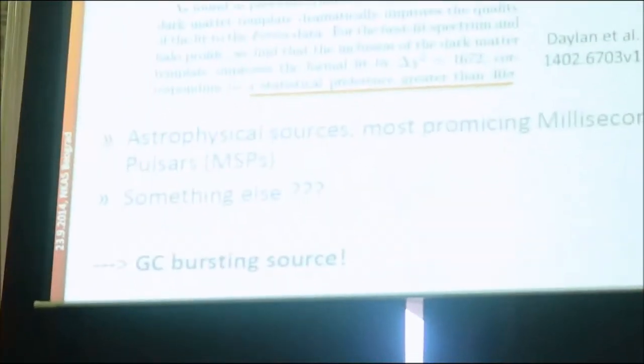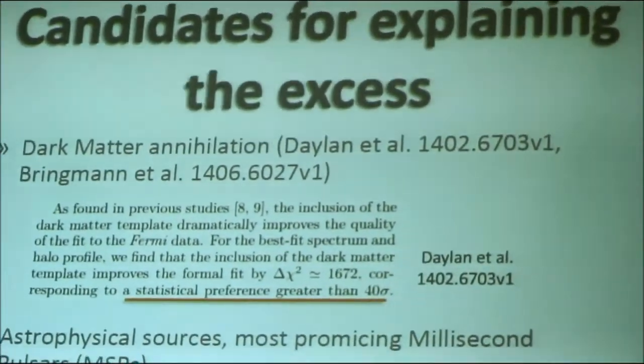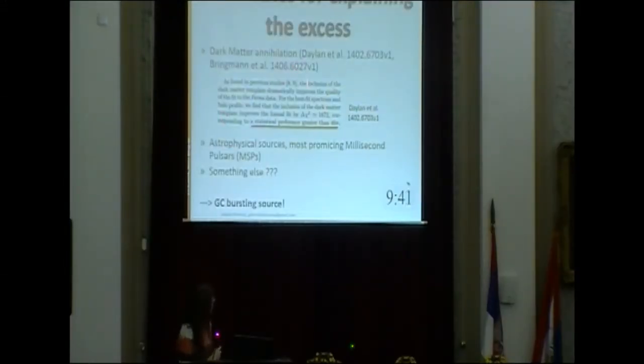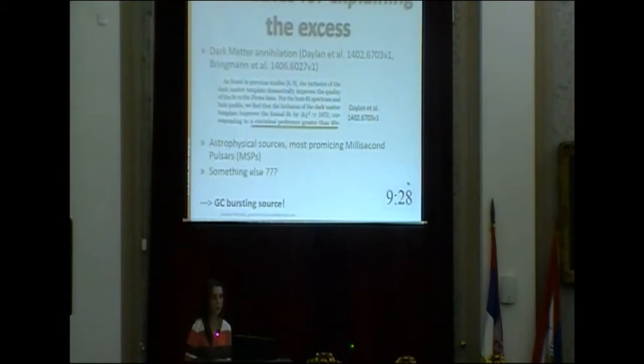We should not forget all the other candidates that could explain such an excess. The first and most intriguing one is definitely dark matter. I refer you to two very good papers: the first one published on this topic by Dalen and his collaborators, and the latest one by Brinkman and his collaborators, both available in the archive. What motivated most of the papers is the claim in Dalen et al. stating there is a statistical preference greater than 40 sigma when adding the dark matter template to all the other Fermi-LAT maps. This 40-sigma result was something very astonishing.